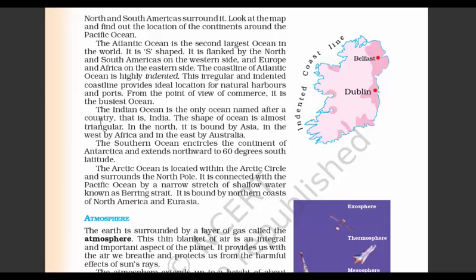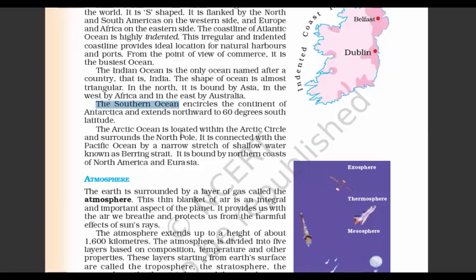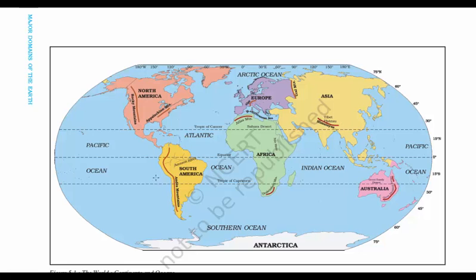The Indian Ocean is the only ocean named after a country — India — while the rest are independent. The Southern Ocean encircles the continent Antarctica completely. The Arctic Ocean is located within the Arctic Circle and surrounds the North Pole. It is connected with the Pacific Ocean by a narrow stretch of shallow water called the Bering Strait, which is also of huge importance as it marks the point where one day ends and another begins.